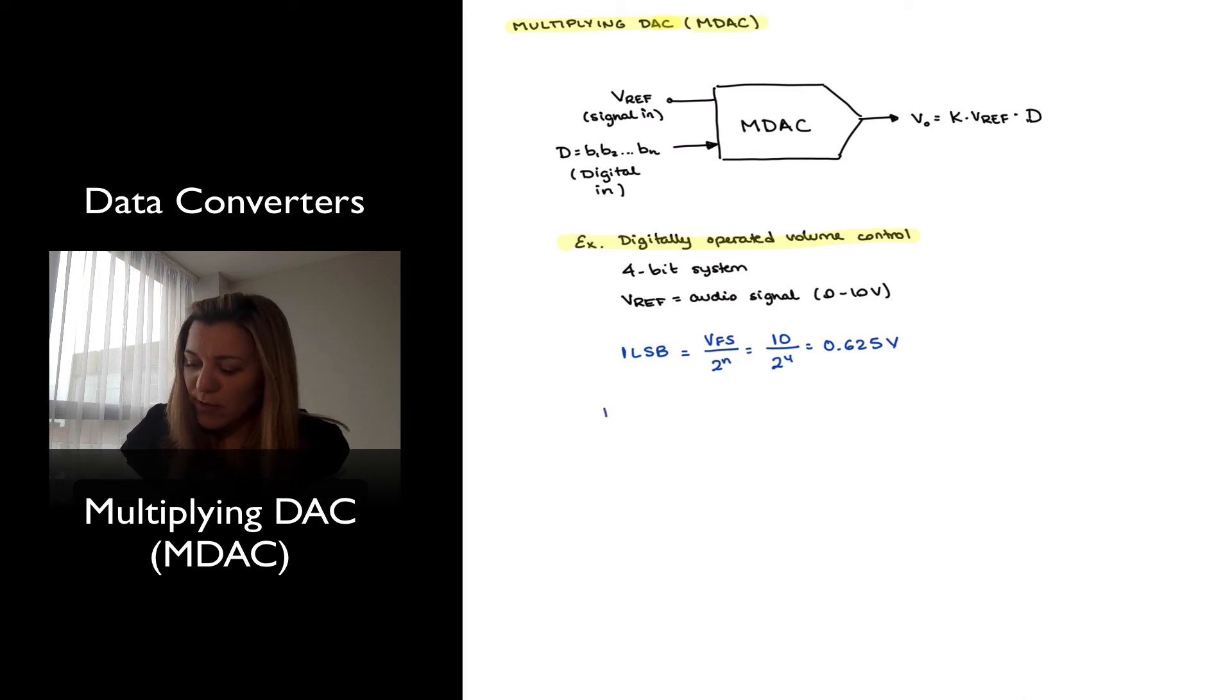So for example, if my digital word is equal to 0000, then my output voltage obviously will just be equal to 0 volts, and so I will have no volume. If my digital input word is equal to 00001, which is essentially equal to digital 1, my output voltage is going to vary from 0 to 1 LSV, which is 0.625 volts.